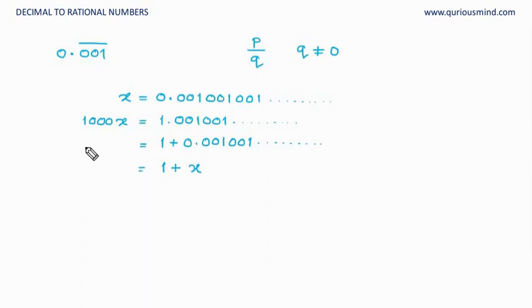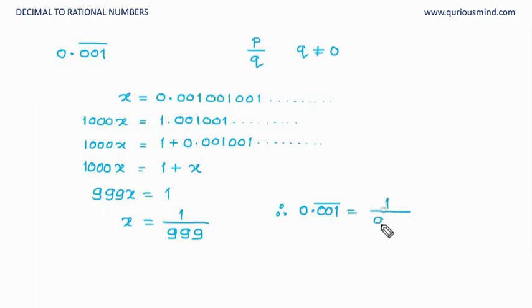So now we have got an equation which we can solve. This x goes that side, so here it is plus, here it subtracts. So it will be 999x is equal to 1. So now this 999 goes that side, it will divide this one and therefore x is equal to 1 upon 999. Therefore 0.001 bar is equal to 1 upon 999.